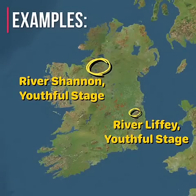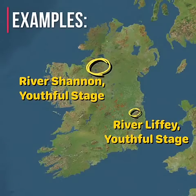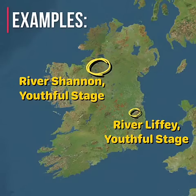Most rivers have V-shaped valleys in their youthful stage. Examples include the River Liffey and the River Shannon in Ireland.